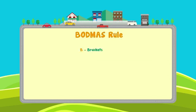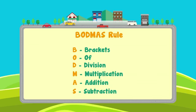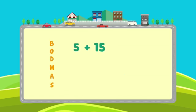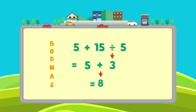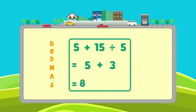The word BODMAS stands for Brackets, Of, Division, Multiplication, Addition and Subtraction. In this rule, we first solve the operation in the brackets, then carry out division, followed by multiplication, addition and subtraction. Now let us solve 5 plus 15 divided by 5 using the BODMAS rule. First, carry out division: when we divide 15 by 5, we get 3. Now add 5 and 3 which equals 8. Thus, we get 8 as the final answer.